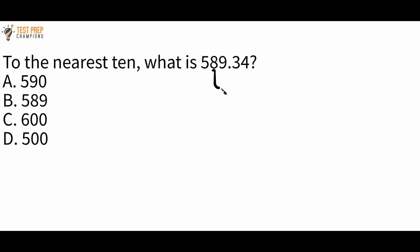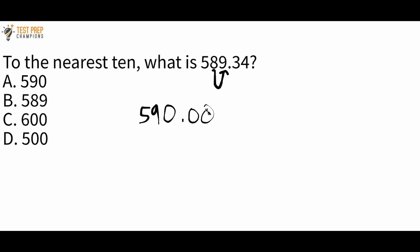Look at the number directly to the right of the 8 and ask: is it less than 5 or 5 or greater? Less than 5 means round down; 5 or greater means round up. We have a 9, so we round up. Leave the 5 as it is, bump the 8 up to a 9, and replace everything else with zeros. You could write 590.00 but you can just leave it as 590. So A is the correct answer.